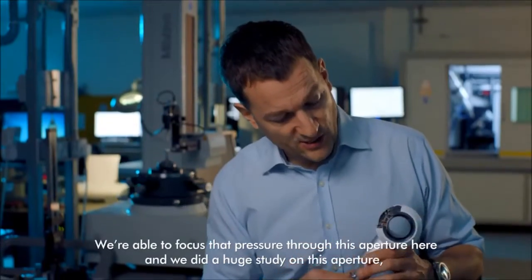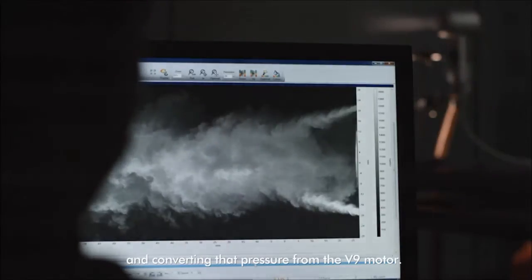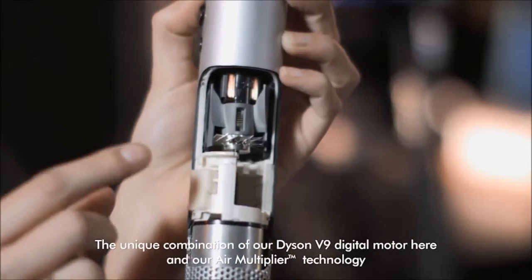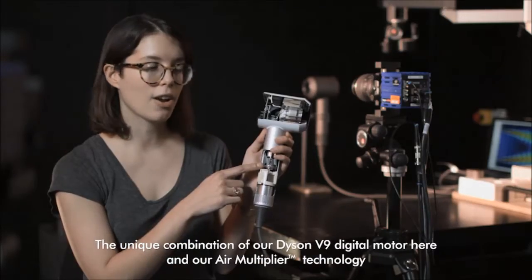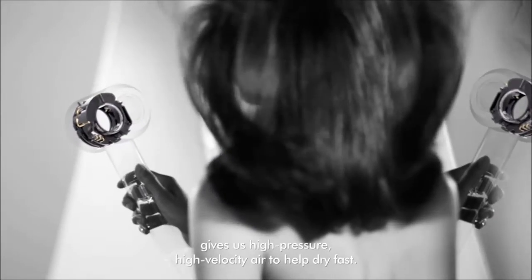We're able to focus that pressure through this aperture here, and we did a huge study on this aperture and converting that pressure from the V9 motor. The unique combination of our Dyson V9 digital motor and our air multiplier technology gives us high pressure, high velocity air to help dry fast.